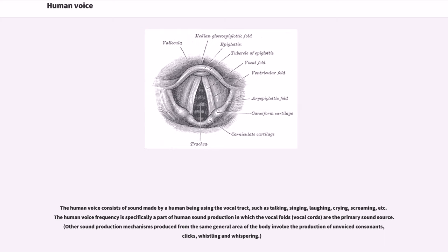The human voice consists of sound made by a human being using the vocal tract, such as talking, singing, laughing, crying, screaming, etc. The human voice frequency is specifically a part of human sound production in which the vocal folds are the primary sound source.